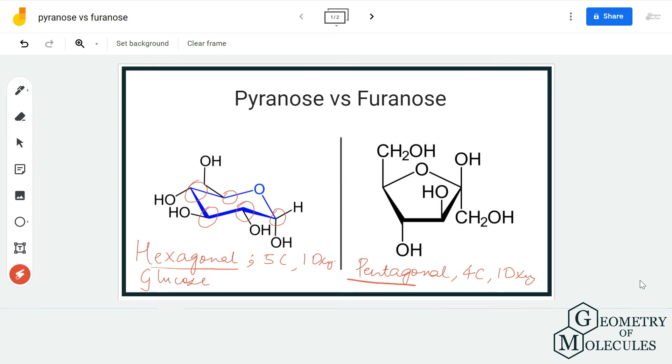There are five carbon atoms in this one, four carbon atoms in this one. The common example that you will come across for fernose is fructose because it has a furin ring in its structure.